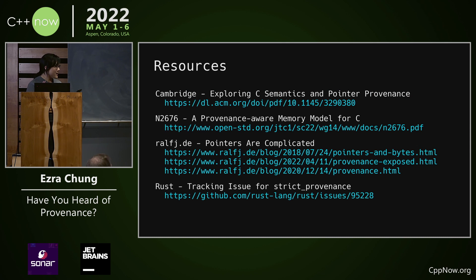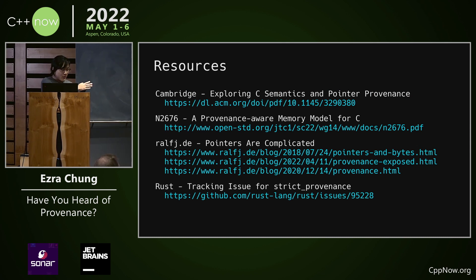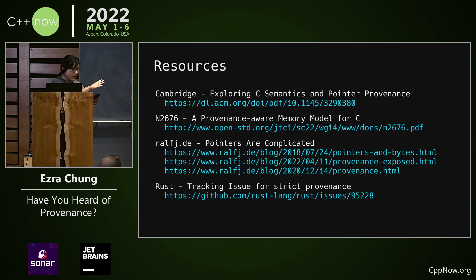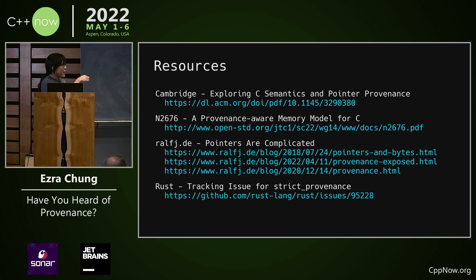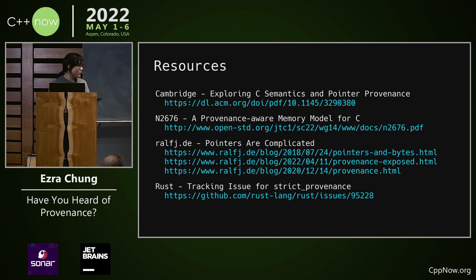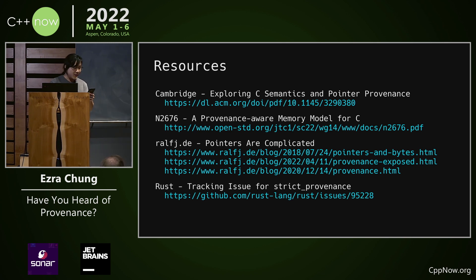Disclaimer: I cannot claim to be a subject matter expert. Everything in this talk is directly informed by those resources. The Cambridge paper is a 30-page paper basically saying this is a problem, please fix it. N2656 is a 123-page paper that says this is a problem, here's our attempt to fix it for the C language. The three-part article series by RalphJ.de is a beginner-friendly but still thorough overview of the topics discussed in the other two papers. There's also a Rust language improvement proposal that is very relevant to this topic. I highly recommend reading those in your own time. This lightning talk hopefully shows a compelling preview into why I find this subject so interesting.